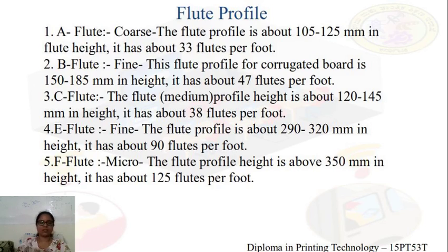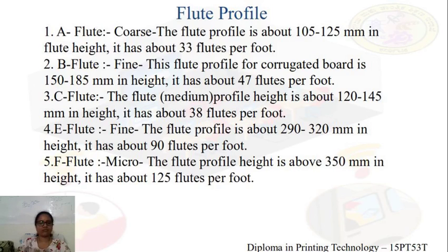The second one is the B flute, which is a fine profiled corrugated board. Its flute profile height is about 150 to 185 mm and it has about 47 flutes per foot. The third one is the C flute, which is a medium profile. Its height is about 120 to 145 mm and it has about 90 flutes per foot.